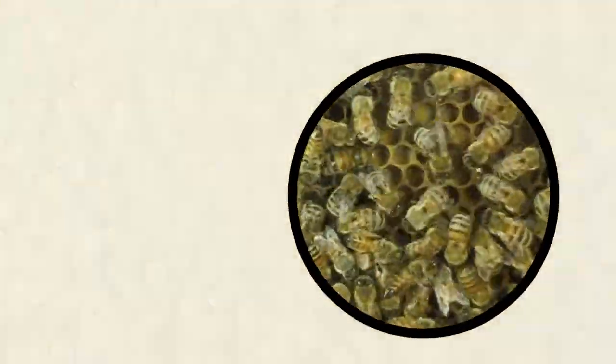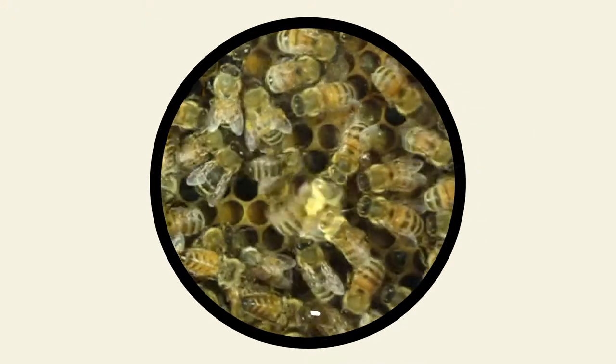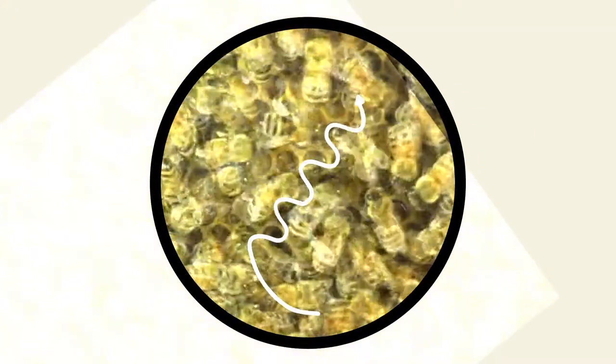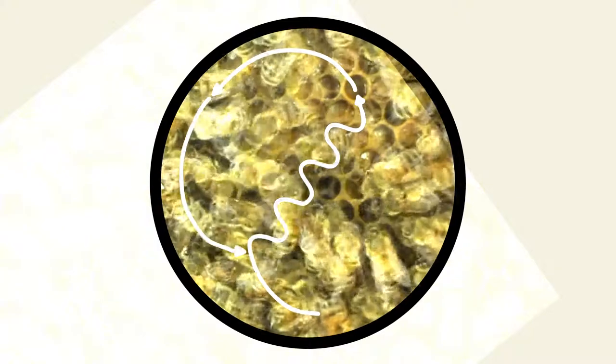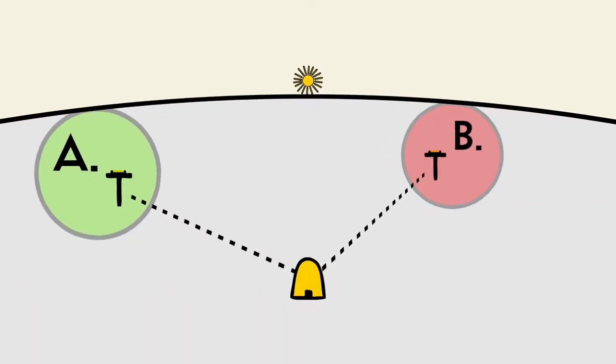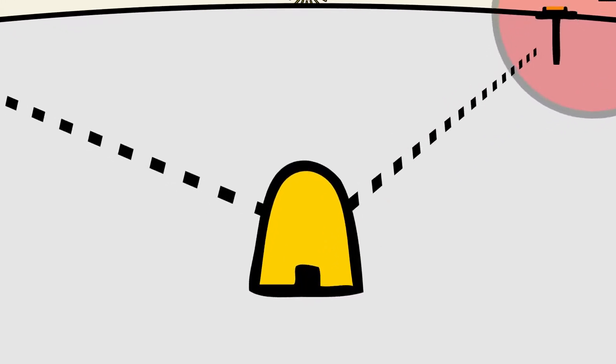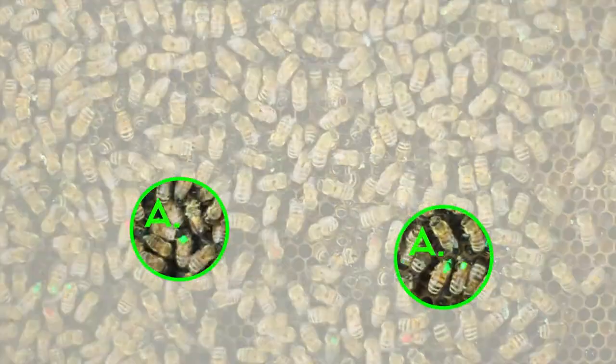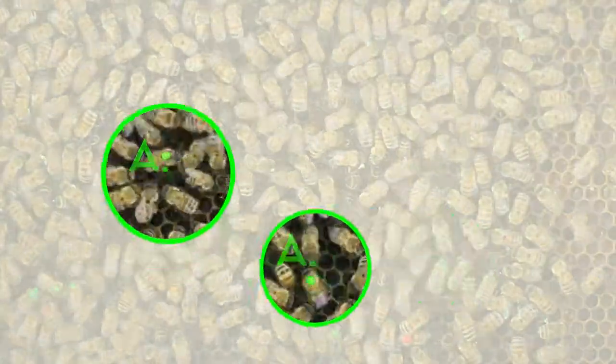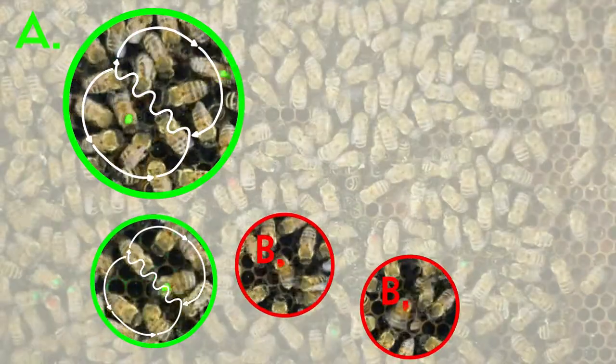Before von Frisch, other scientists had observed that returning bees tended to waggle about excitedly in a figure eight pattern before sharing the collected pollen and nectar with their hive mates. In this two-station experiment, von Frisch noticed that the bees returning from the same feeding source danced differently from bees that arrived from the other location.